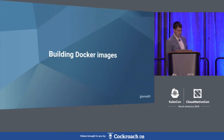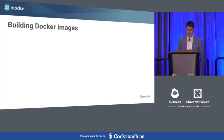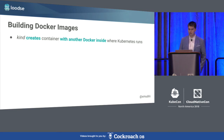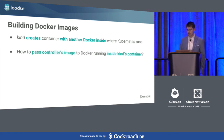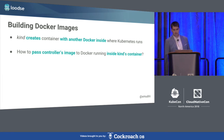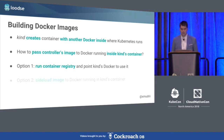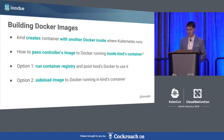There is one more problem: building the Docker images to be used by KIND clusters. When you deploy something to a Kubernetes cluster, it either downloads the image from a Docker registry or uses a local image already available on the cluster. Because KIND runs Kubernetes inside a container, we need to pass our image to that container. One option is to run a container registry and point KIND to use it, but that can be a bit harder.